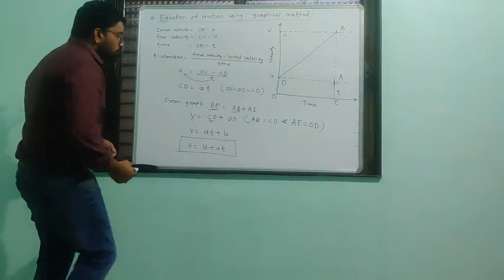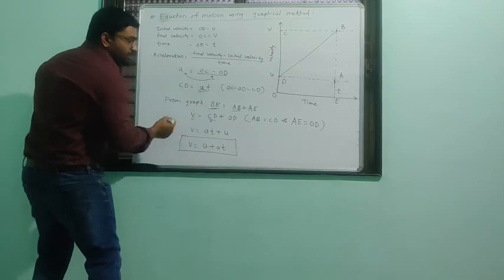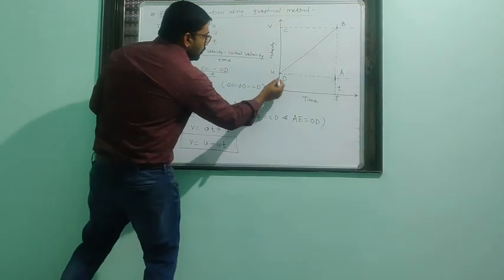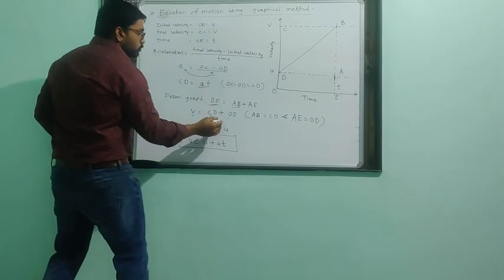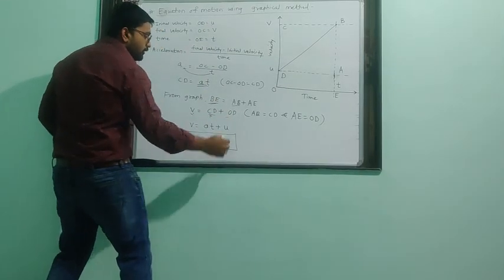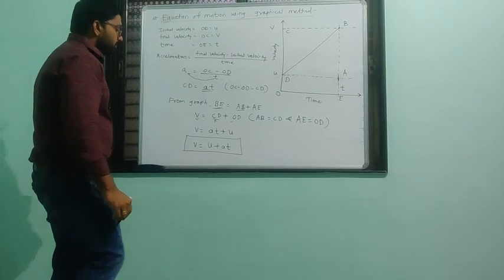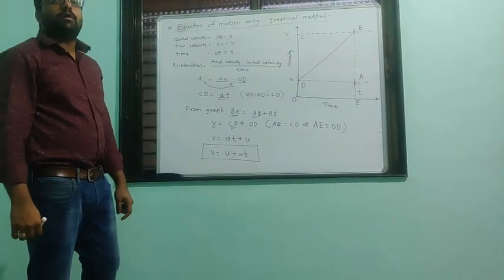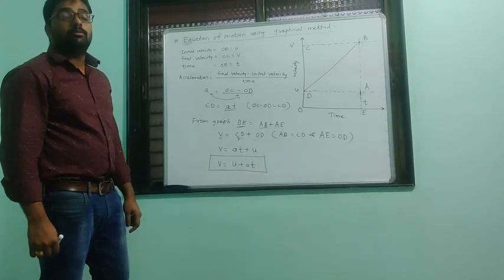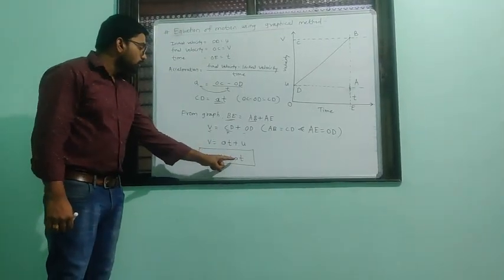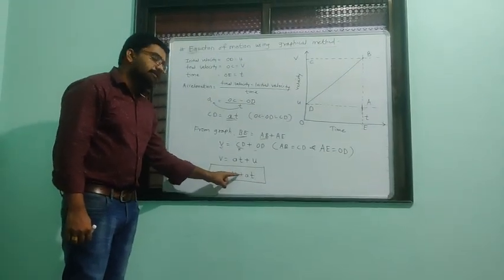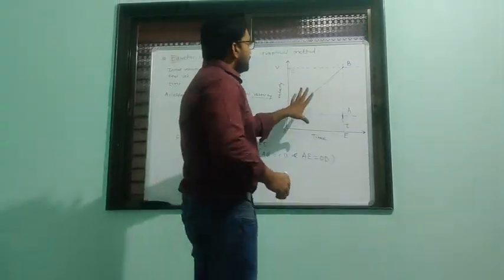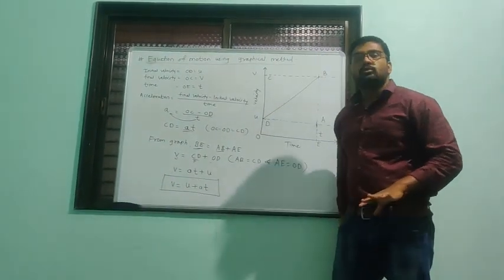Since CD = AT and OD = U, we substitute: V = AT + U, giving us V = U + AT. By using geometry from this graph, we can prove V = U + AT.